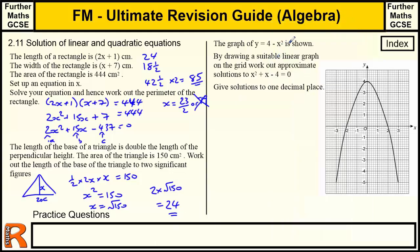Then we've got one with a suitable graph drawing. We've got a graph that's drawn. And then we're asked to find out the solution to one decimal place. It's going to be an approximate solution when we draw a suitable graph. So this is where we've got to add a line to this.